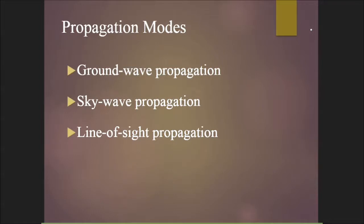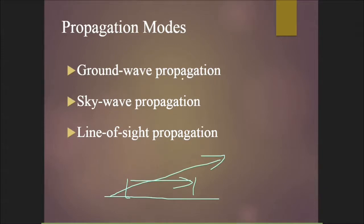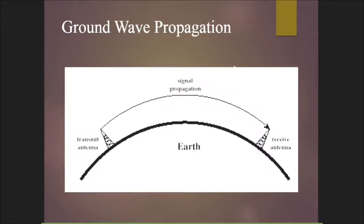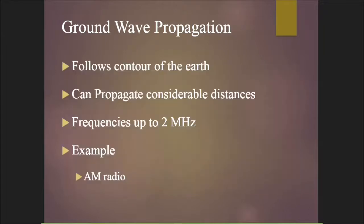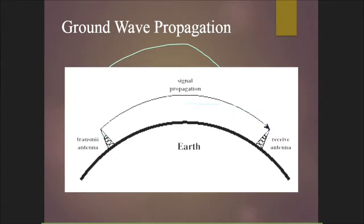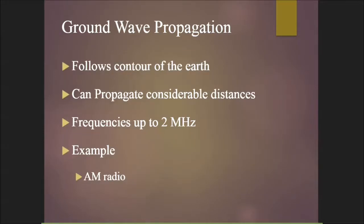Propagation modes for antennas include ground wave, sky wave, and line of sight. In ground wave propagation, the signal travels along the contour of the earth — the waves touch or follow the ground and are received by the antenna. Ground wave propagation can travel considerable distances at frequencies up to 2 MHz. AM radio is an example.